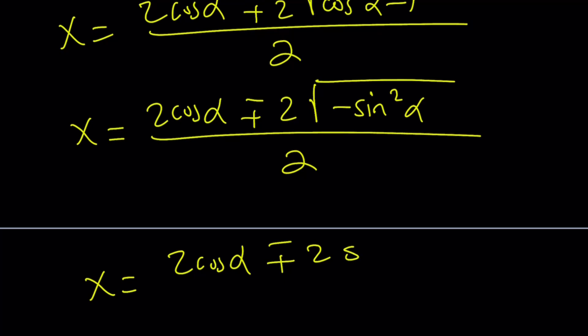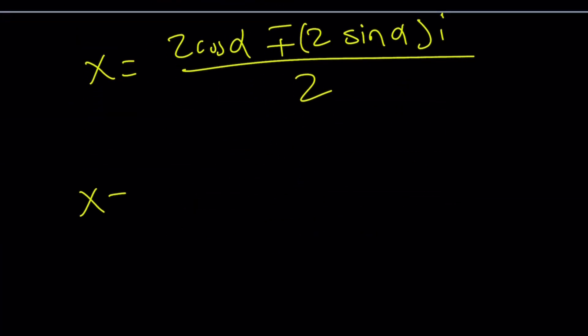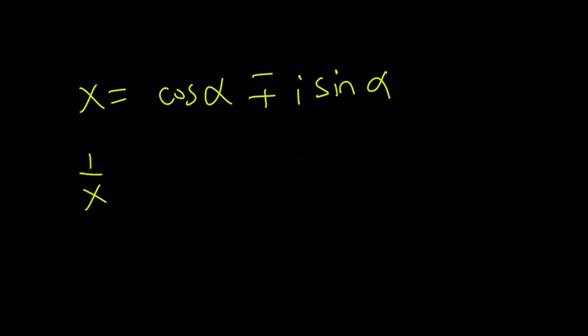We can write this as 2 sine alpha multiplied by i. And then, when you divide by 2, I can write the x as cosine alpha plus minus i times sine alpha. But, wait a minute. You just assumed it was cosine alpha plus i sine alpha. Guess what? It doesn't matter because x and 1 over x are always reciprocal. So, they're just going to switch around. So, it doesn't matter. Once you get the x value, raise it to the fifth power. And, boom. You got the answer.